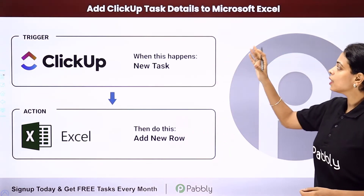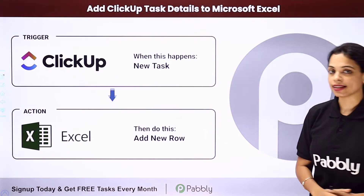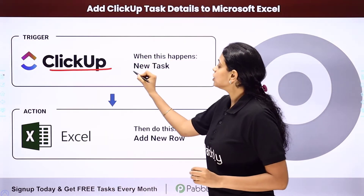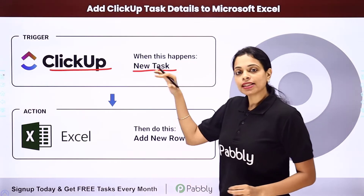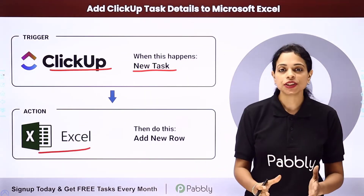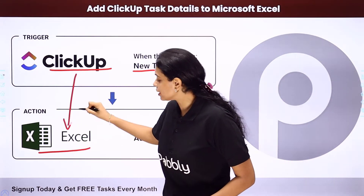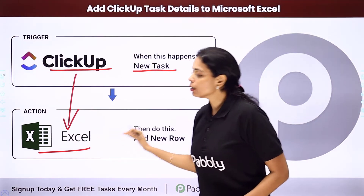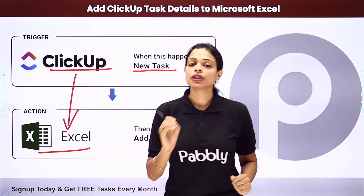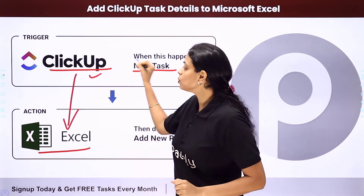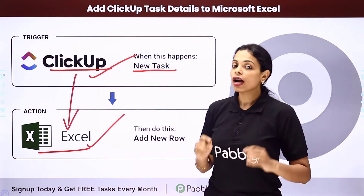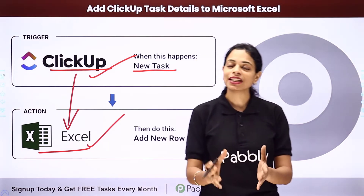In this video we are going to see how to add ClickUp task details to Microsoft Excel. So let's say that you are using ClickUp as a task management software where every time there is a new task added, the details of this task should be added as a new row in your Excel spreadsheet. Now how can you do this? By integrating these two applications so that this entire process can get automated. To understand that let me take you to my screen.